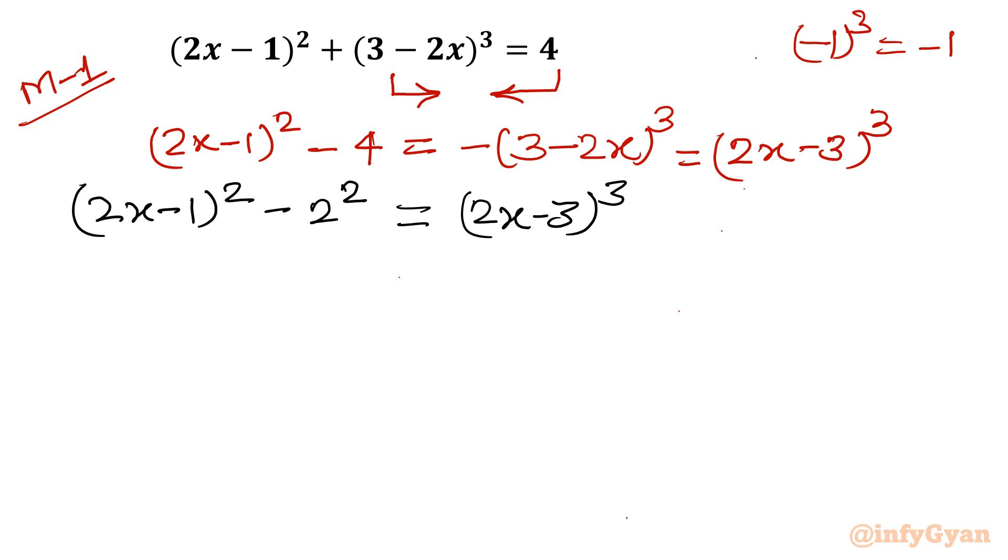Now a² - b². We know that a² - b² = (a + b)(a - b). Let us apply. So I will write (2x - 1 + 2) times (2x - 1 - 2) = (2x - 3)³.